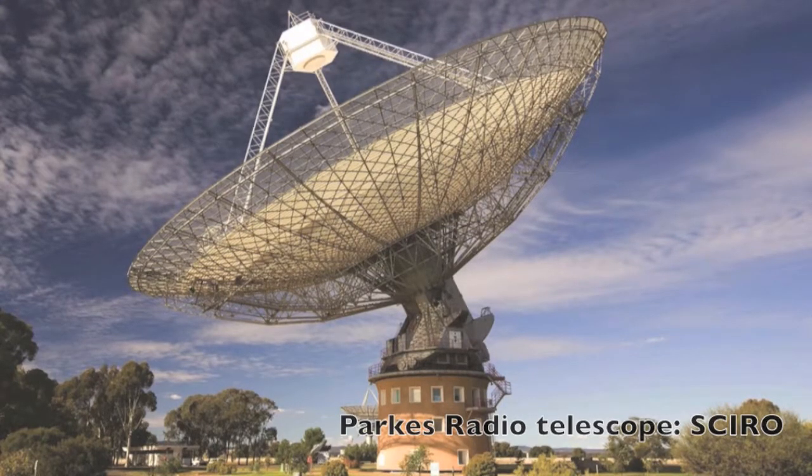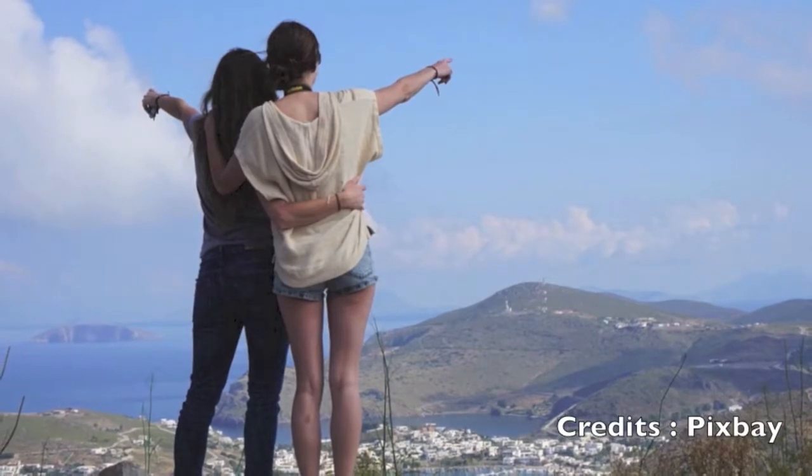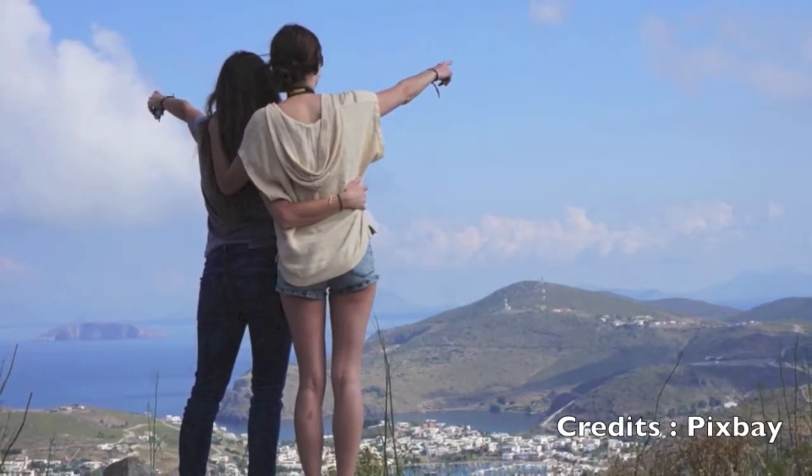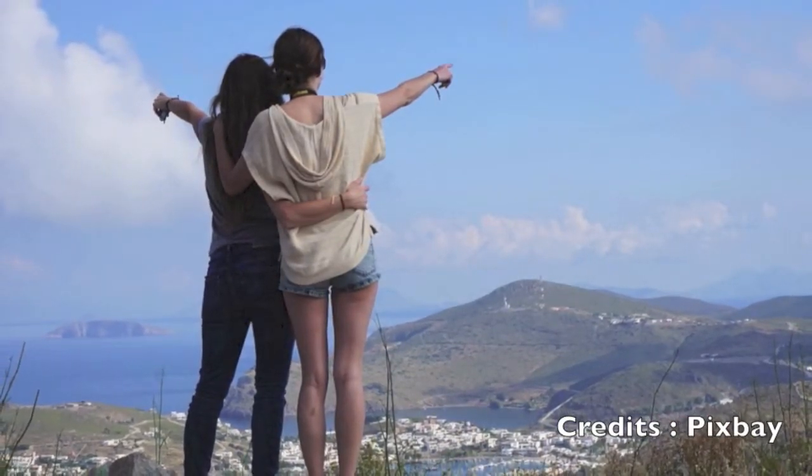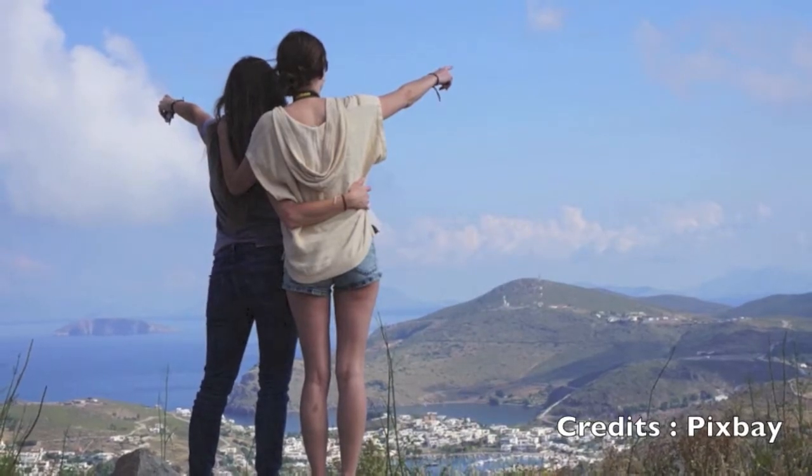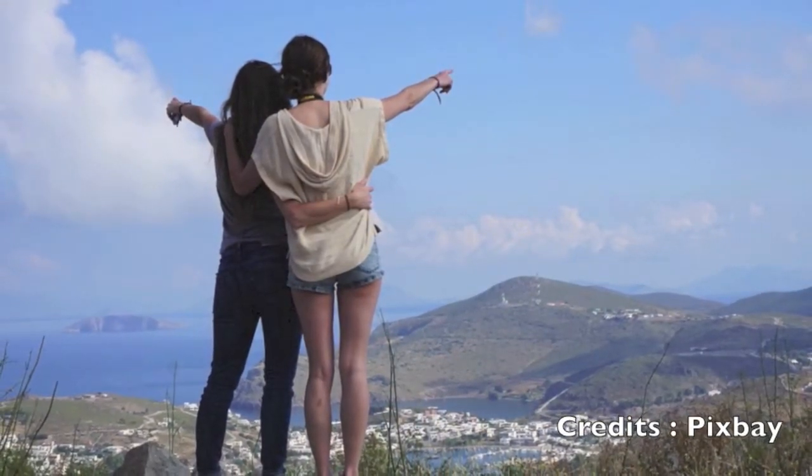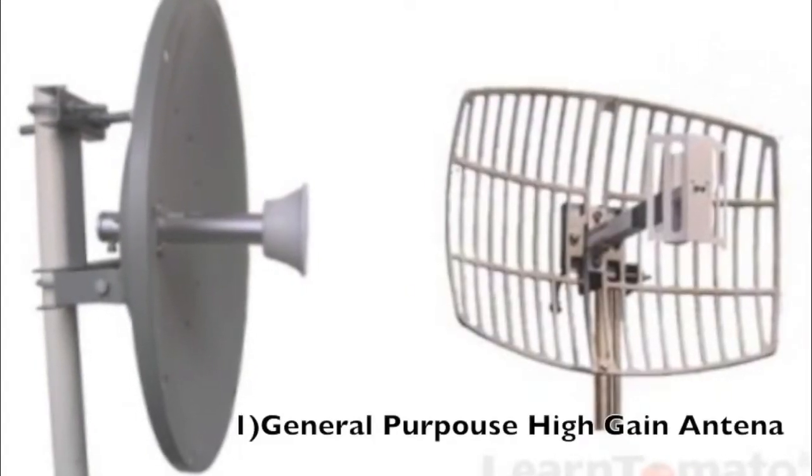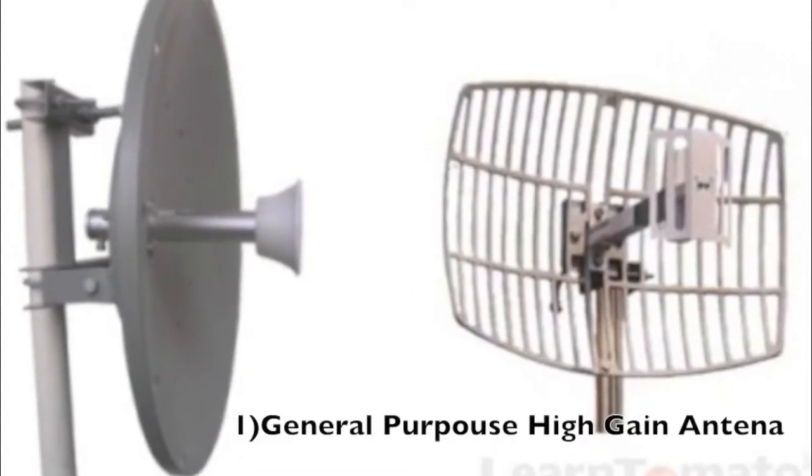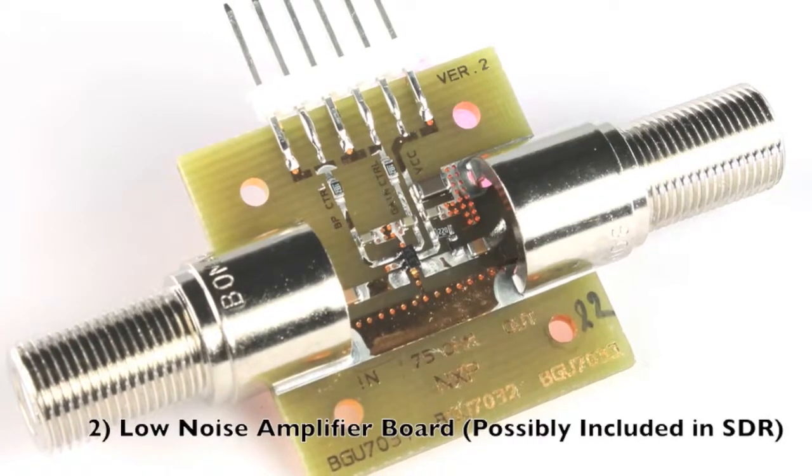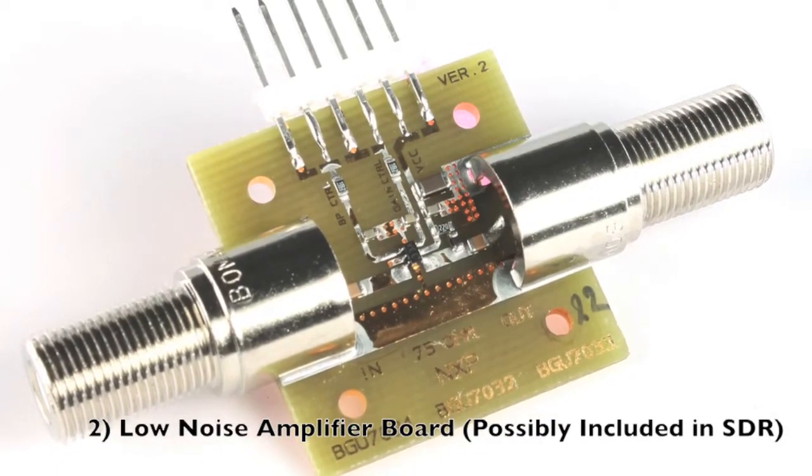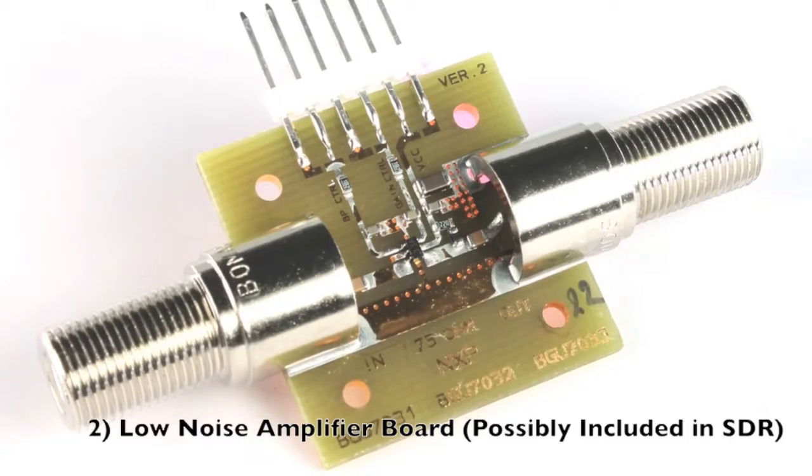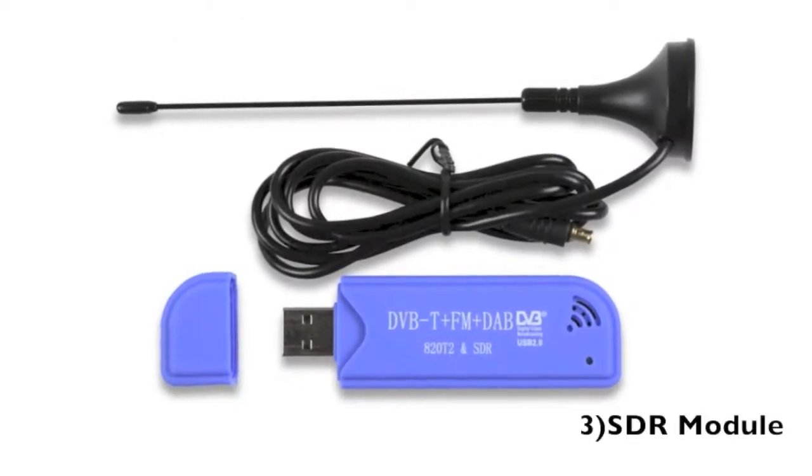Fortunately, radio astronomy is not the case and it can be surprisingly simple. Arguably more simple than conventional astronomy. All one needs is a fairly limited amount of equipment. A high-gain antenna such as a parabolic dish from an old rooftop or an old Yagi antenna. A low noise amplifier such as this one. Possibly a filter. And a software-defined radio.